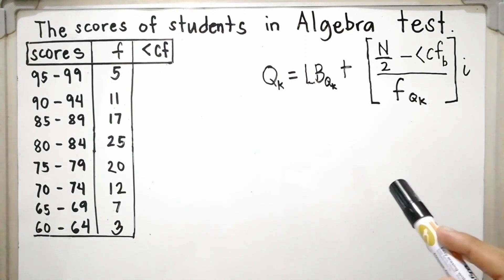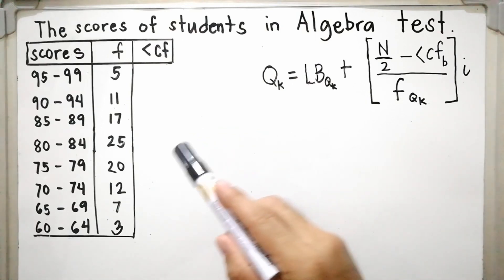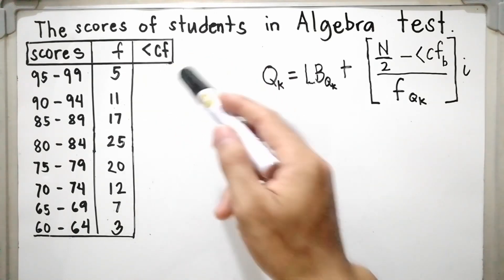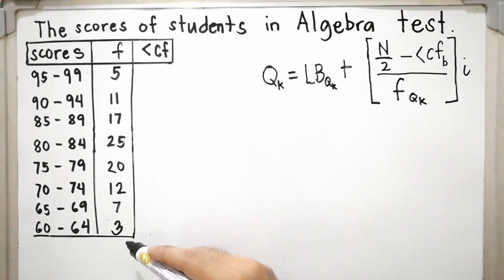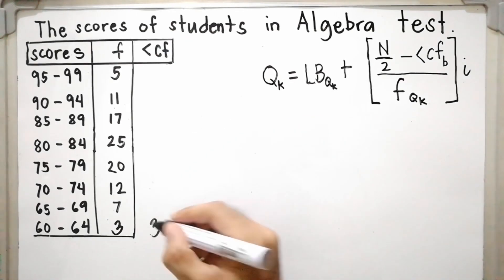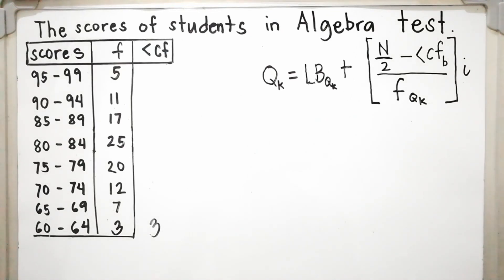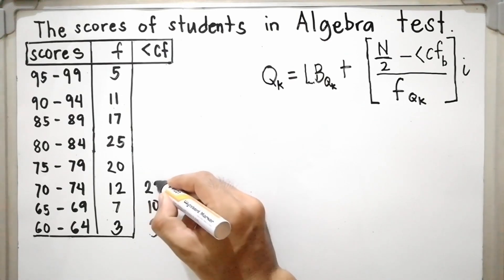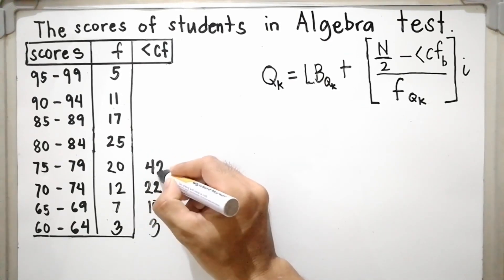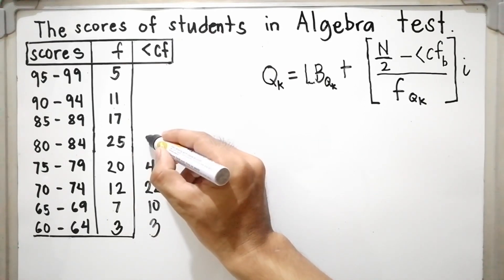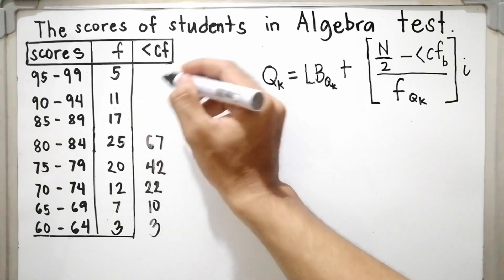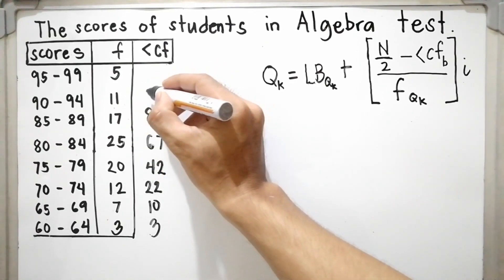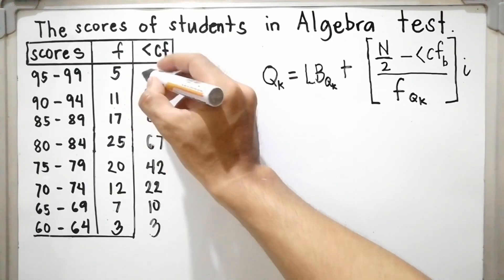This is similar to computing the median of grouped data, so you need the less than cumulative frequency column. Less than cumulative frequency is the sum of the frequencies starting at the lowest class. The frequency of the lowest class is 3, so rewrite 3. Then add each class frequency one by one: 3 plus 7 is 10, plus 12 is 22, plus 20 is 42, plus 25 is 67, plus 17 is 84, plus 11 is 95, and plus 5 is 100.